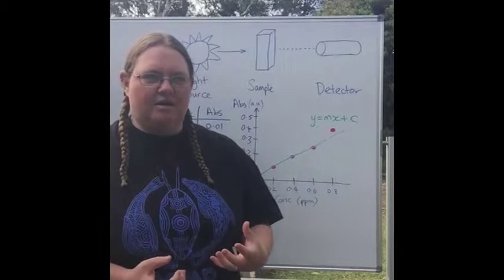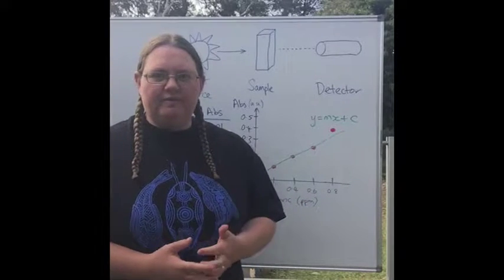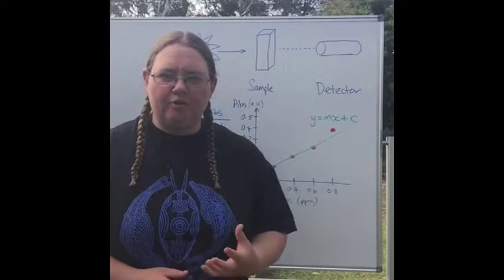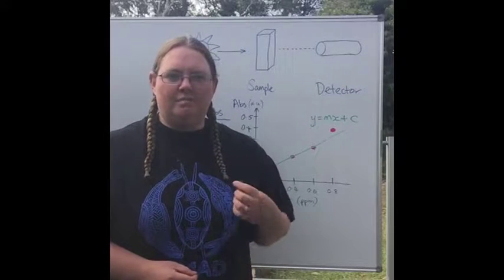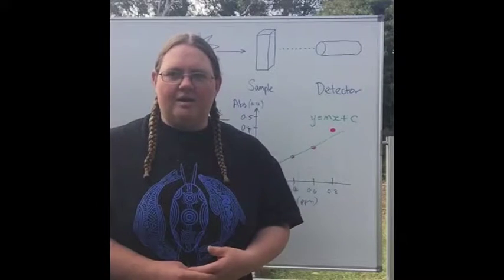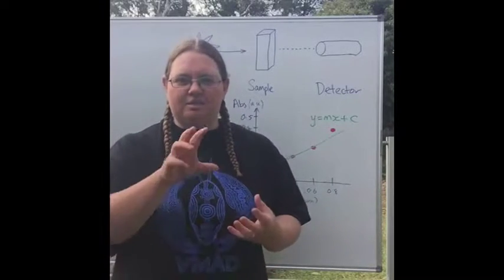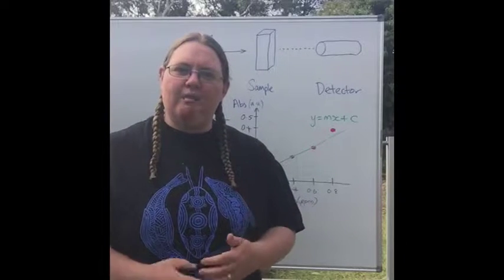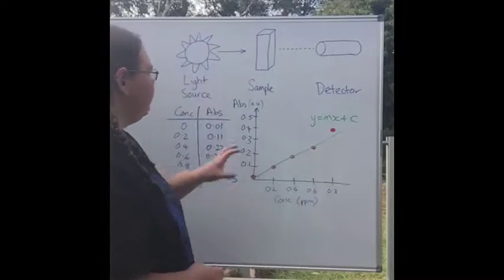In UV-visible analysis, you would use what's called a monochromator. If you think about the word mono, it means one, and chroma is color. A monochromator essentially pulls out one color or one wavelength for you to use in your UV-visible analysis.